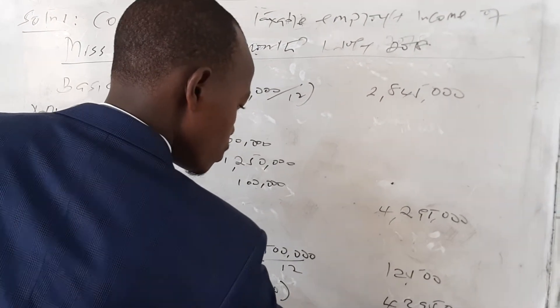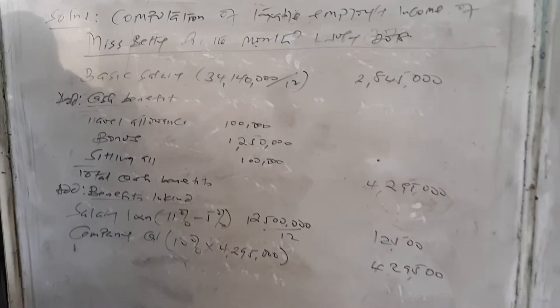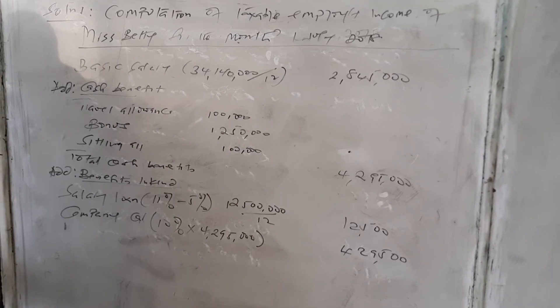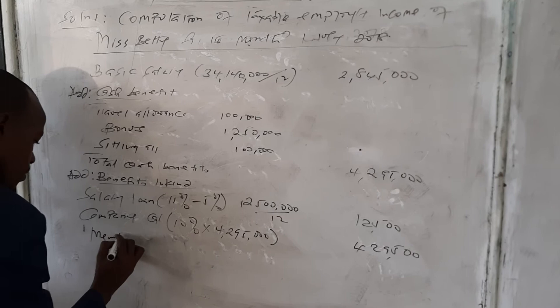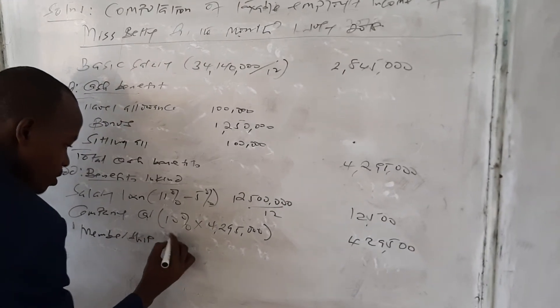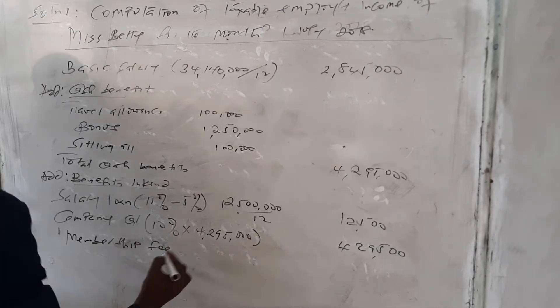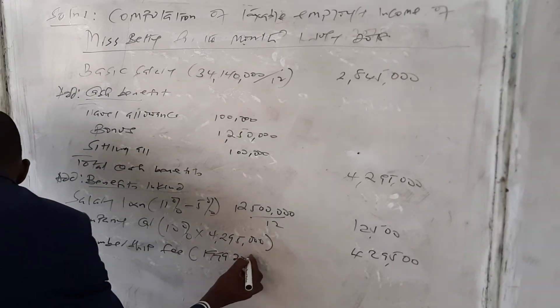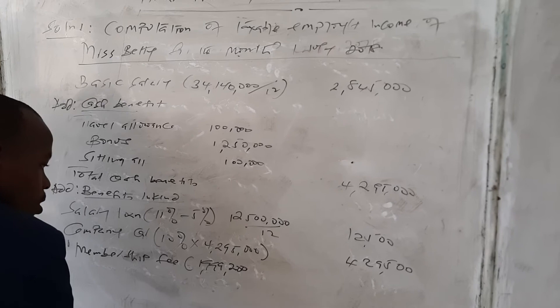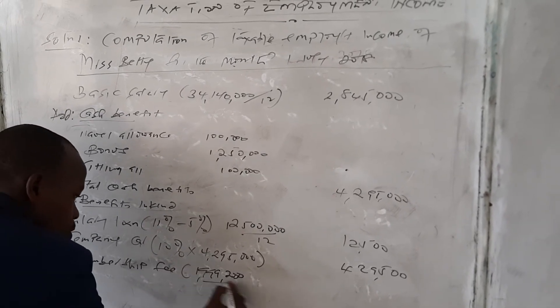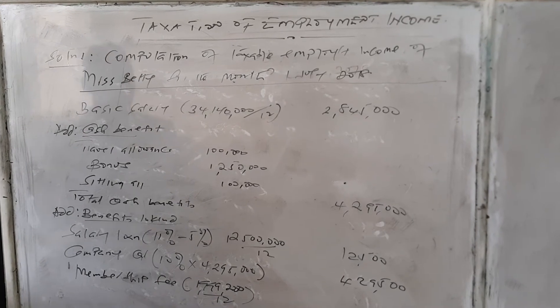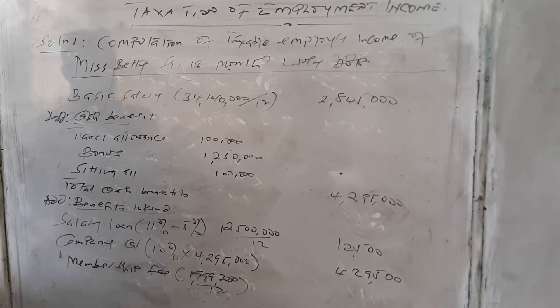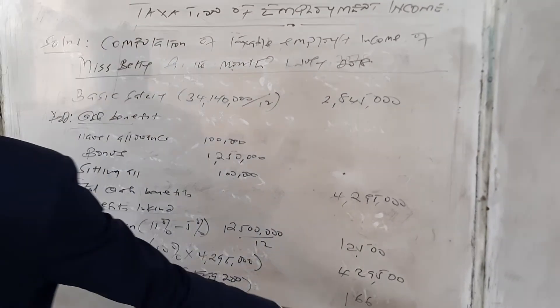Another benefit is the membership fee of 1,992,000. We divide by 12 to put it on a monthly basis, which gives us 166,000.